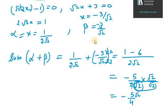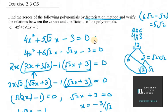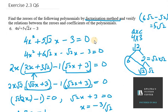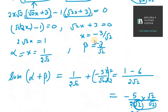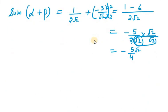Now to verify this answer, we need to compute minus B over A. B is 5 under root 2 and A is 4. So minus B over A equals minus 5 under root 2 over 4. Hence verified for the sum of roots.